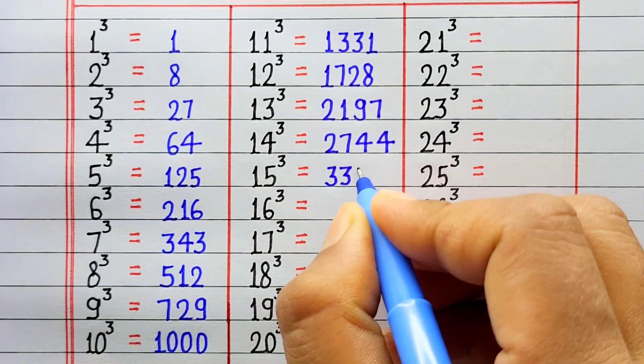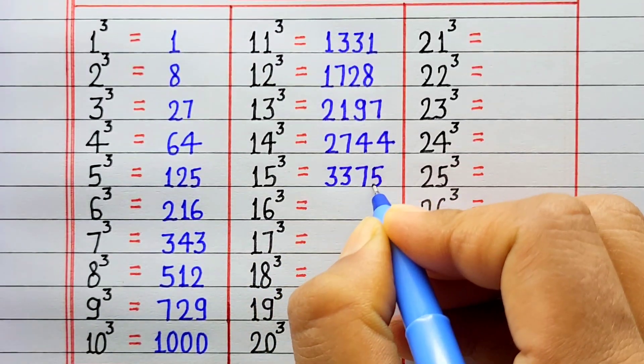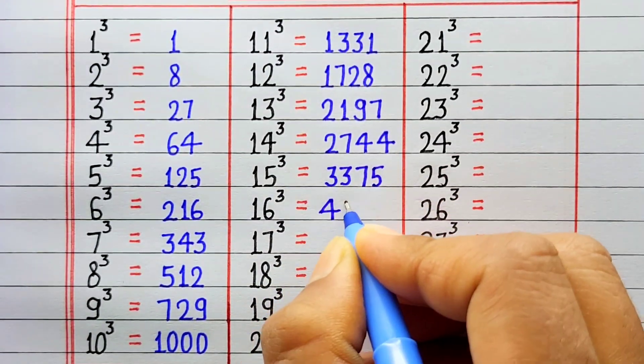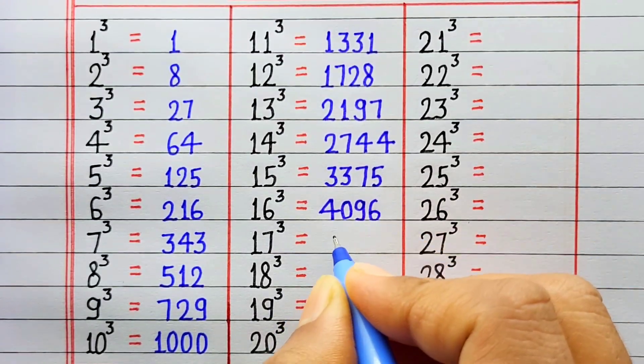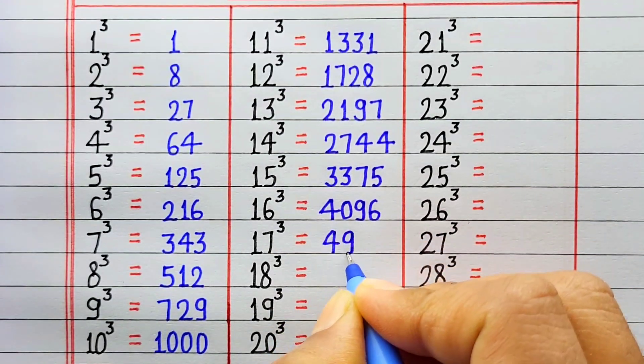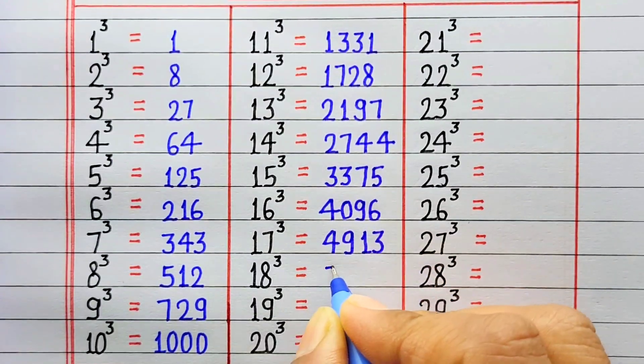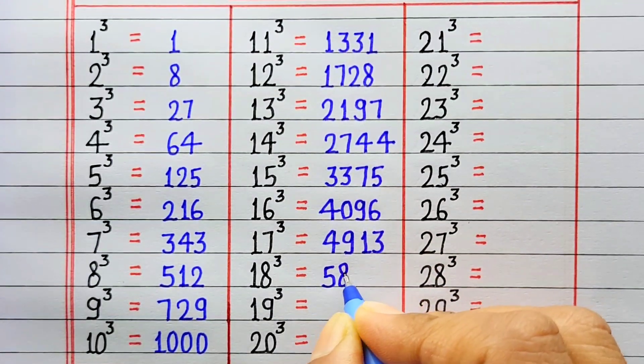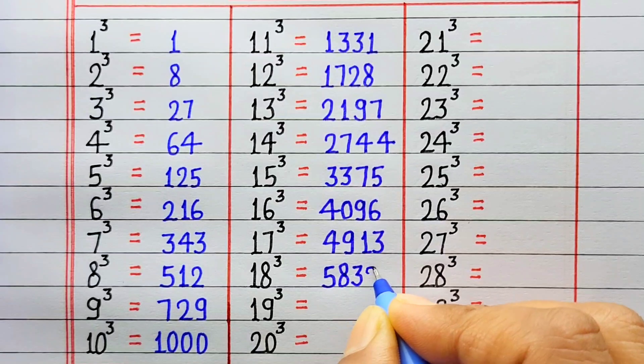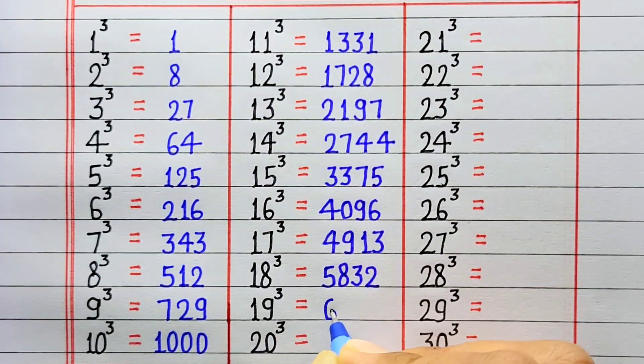Cube of 15 is 3375. Cube of 16 is 4096. Cube of 17 is 4913. Cube of 18 is 5832.